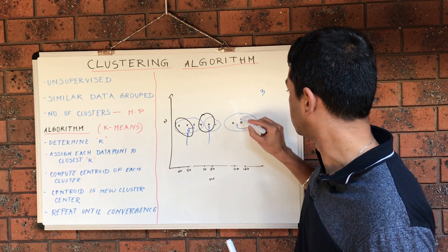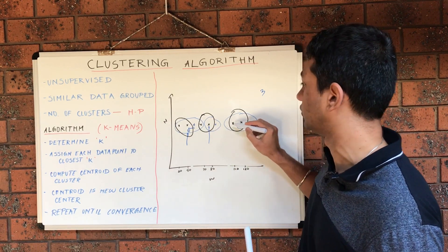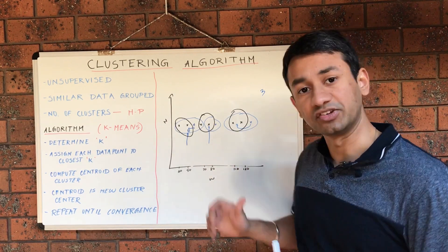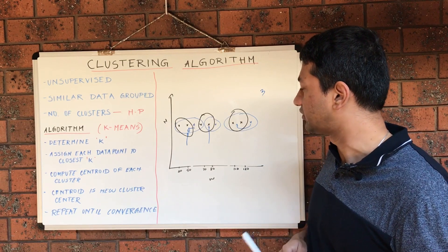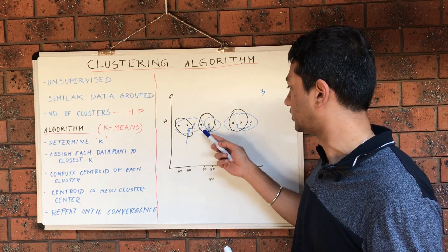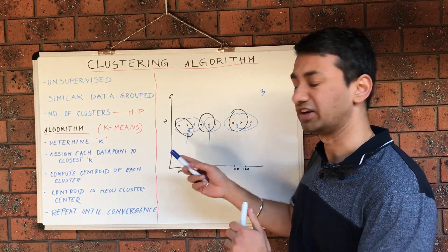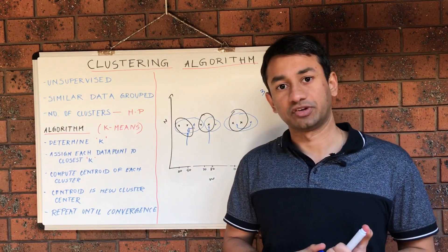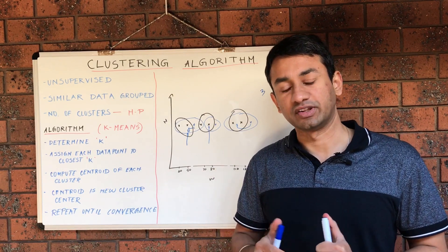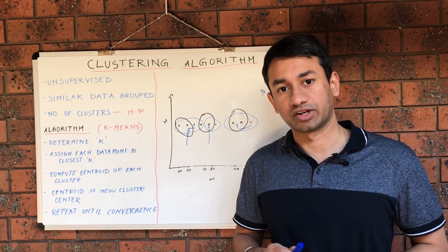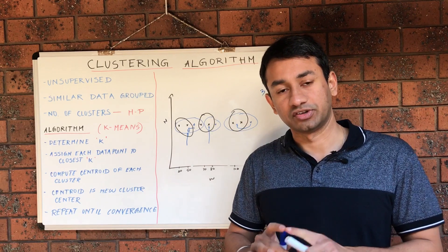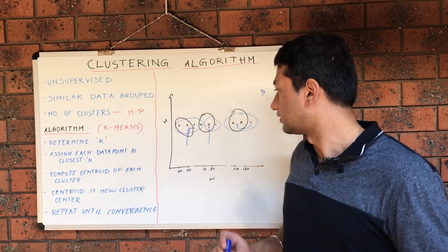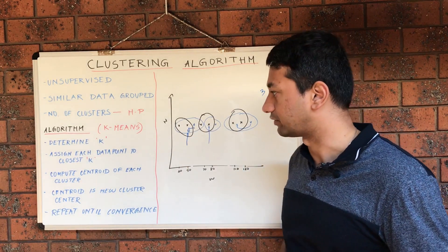We iteratively repeat the same steps until we don't see any changes in the data points assigned to a particular cluster. That state is called convergence. When we reach convergence — when iterating produces no change in any of the clusters and the data points remain with the same clusters as the previous iteration — we stop and finalize the identified clusters.